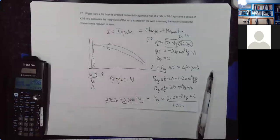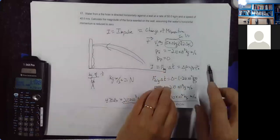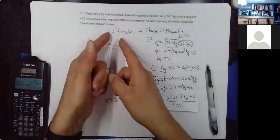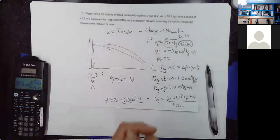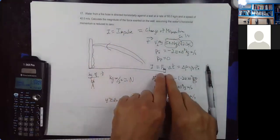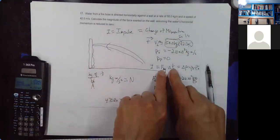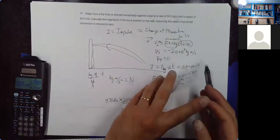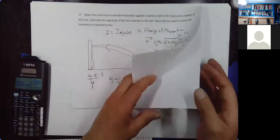So there's one — a change in momentum problem using impulse. The impulse equals the change in momentum; the impulse is the average force times ΔT.